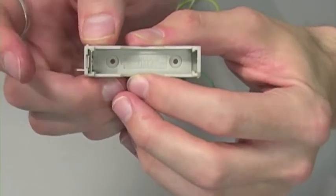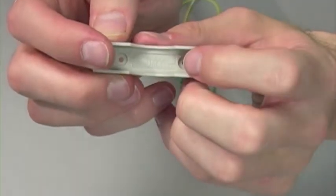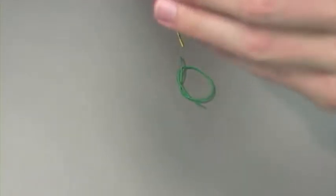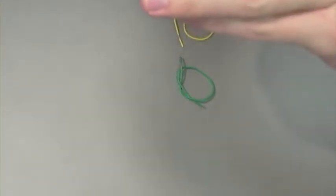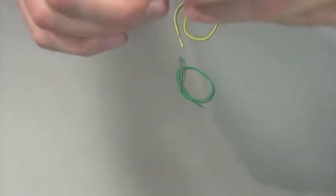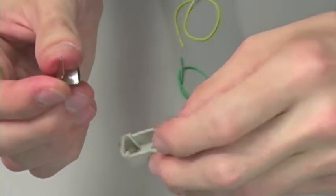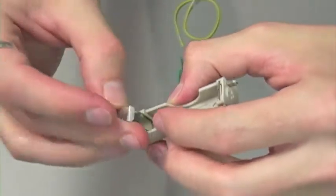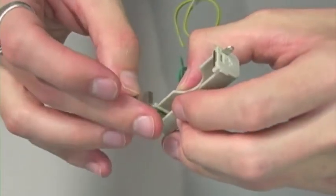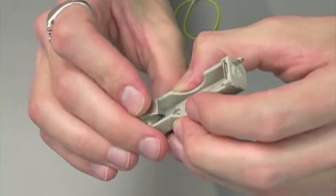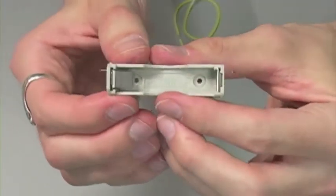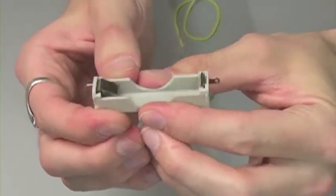Please note the location of the positive and negative signs. Now once again, take one of your small terminals, battery terminal C and slide that in right on top of the small battery terminal so that it looks like this.